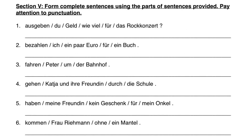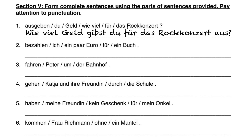In section five we have to actually start putting together our own sentences, so we have to worry about word order, conjugation, and all that. The first one has the question word wie viel at the beginning, so we start with that, followed by the singular noun Geld. We want to say: how much money are you spending for the rock concert? Wie viel Geld gibst du für das Rockkonzert aus? Don't forget — aus goes at the end because we have a separable prefix.